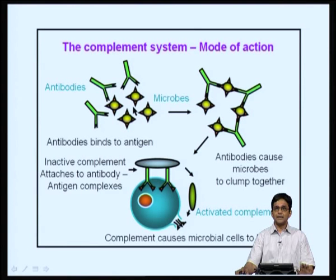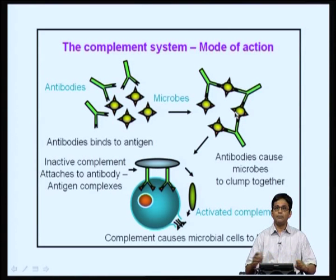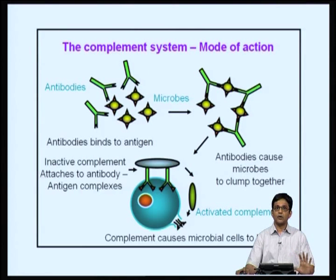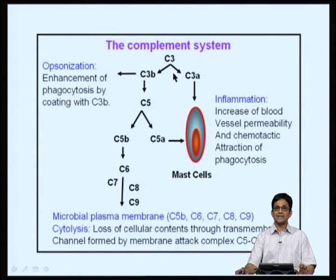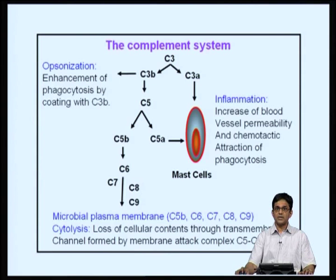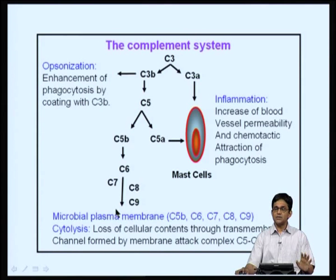What is shown here is the classical pathway. Antibodies produced against microbes result in antigen-antibody complexes; these are clumped together and complement binds to them, resulting in lysis of the microbes. C3b is an opsonin, which means it enhances phagocytosis by coating microbes — that is the process of opsonization. It also results in activation of the complement cascade, leading to microbial plasma membrane loss and lysis of microbes.